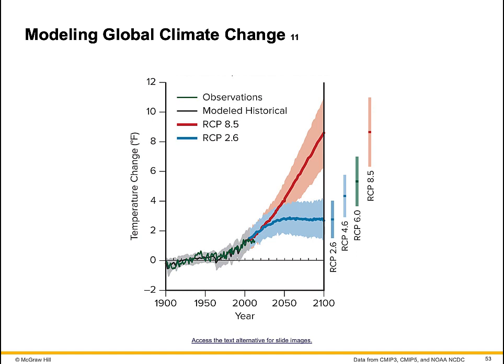Scenario A1B presumes rapid economic growth, moderate population growth, and a balance between old and new energy sources. Scenario B1 involves moderate economic and population growth with emphasis on new technologies available to all nations.